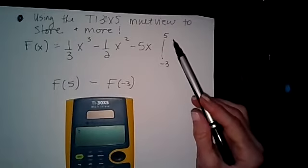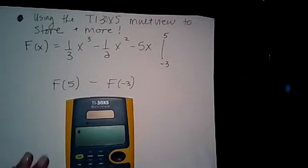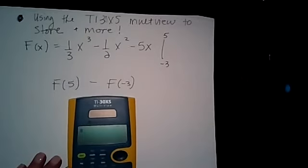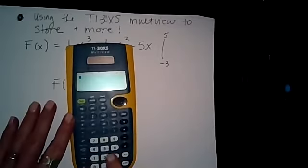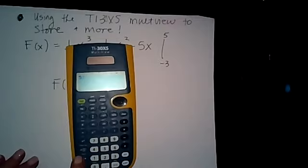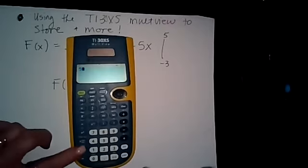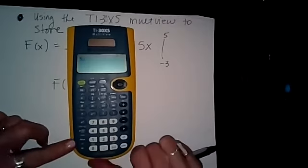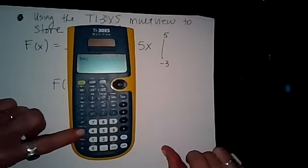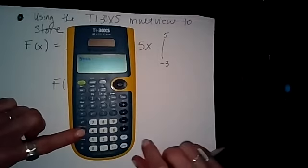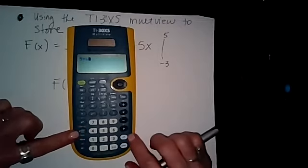So what I'm going to do is put 5 in my calculator. I do that by saying 5 and I store. It's my store button right above on. So I store and then the X button is right above it. 5 store for X and then I enter.